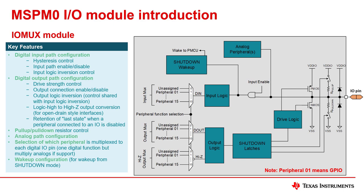Through the I/O mux, I/O can be configured as a digital input or output. When used as a digital input, it can support the configuration logic, logic inversion control, and hysteresis control. It can also select the corresponding digital peripherals through input mux. A list of peripheral functions can be found in each device's datasheet.